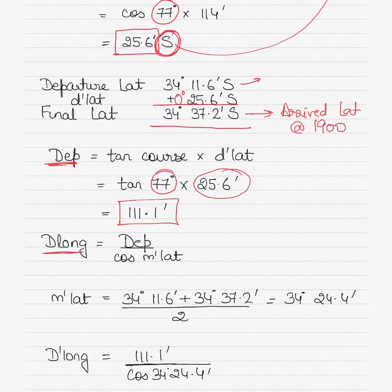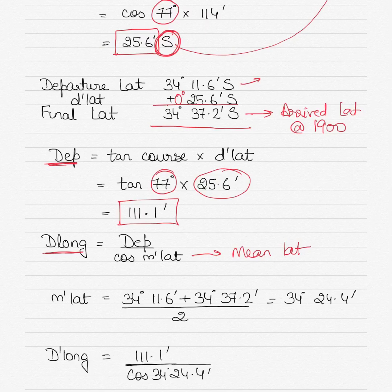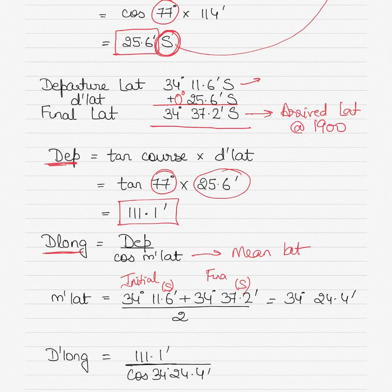M-lat is the mean latitude. Since the initial and final latitudes are both in the Southern hemisphere — same hemisphere — you add the two latitudes and divide by two. Be careful not to accidentally use the D-lat value; use only the initial and final latitudes.